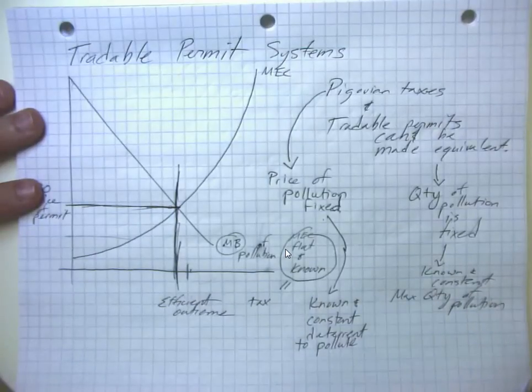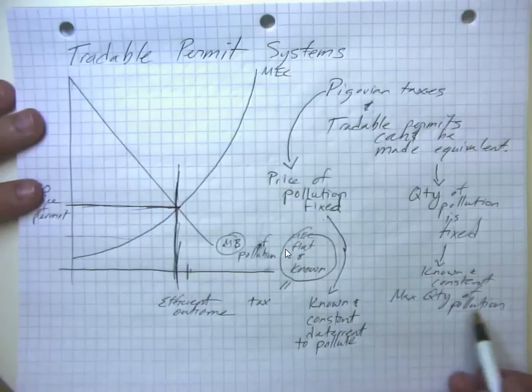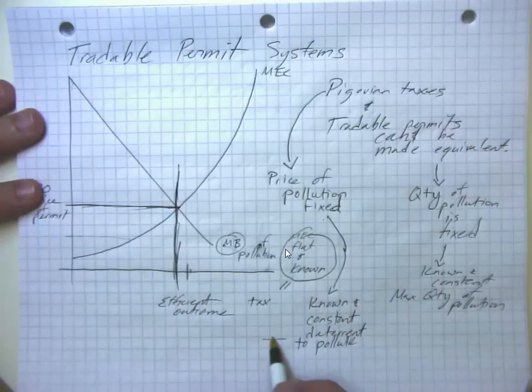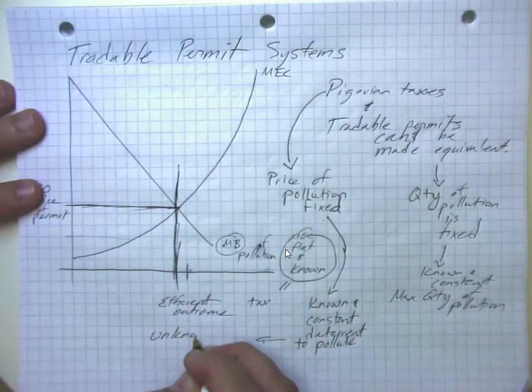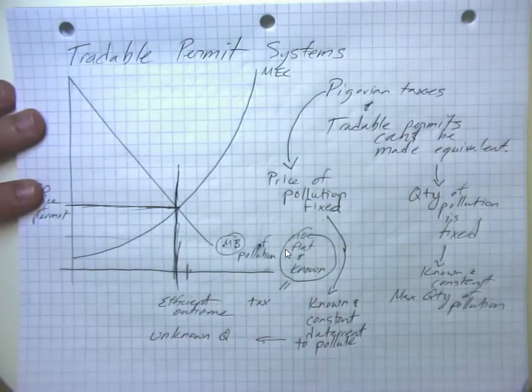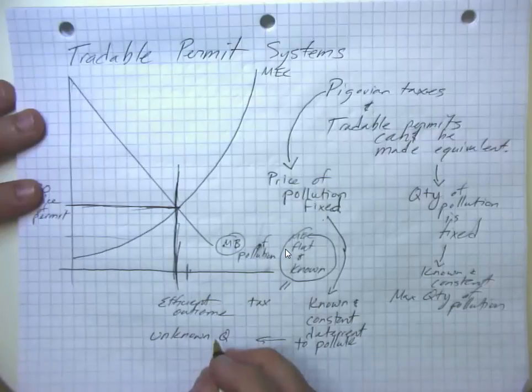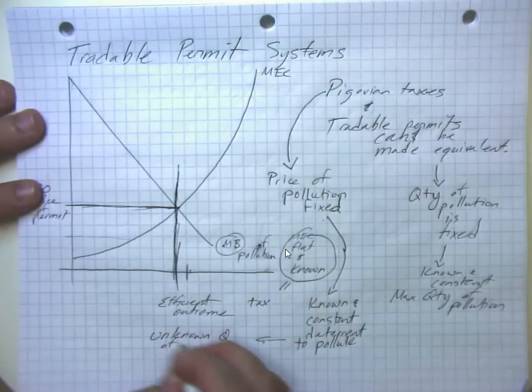But it may be that in this case, we have an unknown, or it will be the case, that here, if we have the Pigovian tax, we will have an unknown quantity of pollution.